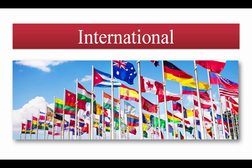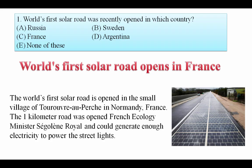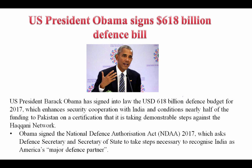After international, we will cover national, then trade and banking, economics, appointments, and everything relevant to your exam. Let's start with the international section. Question: The world's first solar road was recently opened in which country? The world's first solar road opened in a small village of France. The one kilometer road was opened by the French Ecology Minister Royal and could generate enough electricity to power the street lights. Your answer is C, that is France.